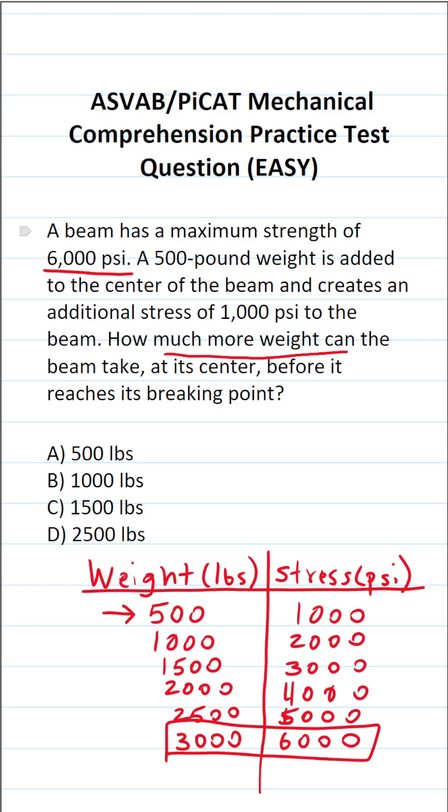we want to know how much more weight can be added to the beam before it reaches its breaking point. We started with 500 pounds and we went all the way up to 3,000 pounds. So to determine how much more weight we had to add to that 500 pounds, we'll do 3,000 minus 500, which is going to be 2,500. In other words, we had to add 2,500 more pounds of weight in order to reach the breaking point of this beam. So this one is going to be D.